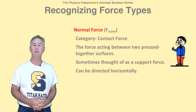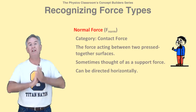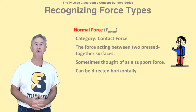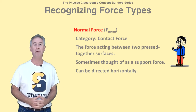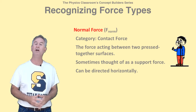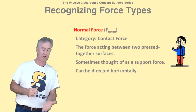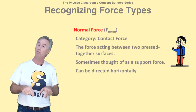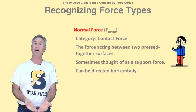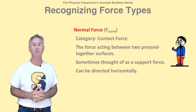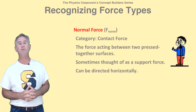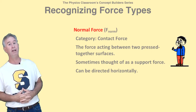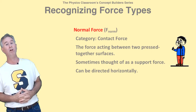Normal forces exist whenever there are two surfaces pressed against one another. The interaction between pressed-together surfaces results in a force on both objects. When you sit in a chair, the force of the chair upon your butt is called a normal force. When you stand on the ground, the force of the ground upon your feet is called a normal force. Even when you lean against a wall, there's a horizontal normal force upon your body.